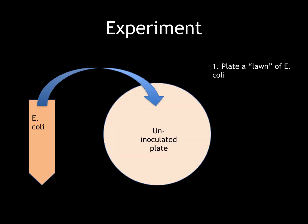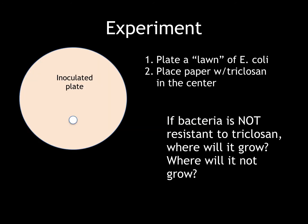I'm going to continue by going over the experimental procedure for this week in lab. Our first step is to take an un-inoculated plate. This plate will just be filled with agar, which is a growth medium for the bacteria. Then you're going to plate a lawn of E. coli. After this lawn has been plated, you're going to place a paper with Triclosan in the center.